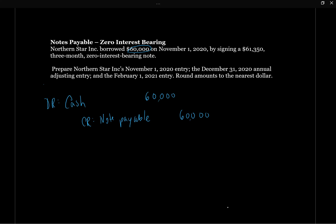On December 31st, we need to accrue the interest. There's a small difference here — I should have labeled the first entry as November 1st. On December 31st, we know we need to accrue the interest on the note payable. But in our previous question, we accrued the interest as interest payable because we would owe the interest. Whereas here, we don't actually owe any interest separately.